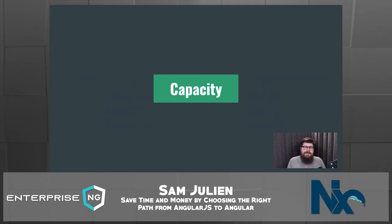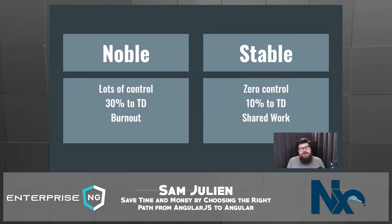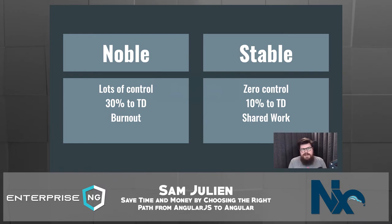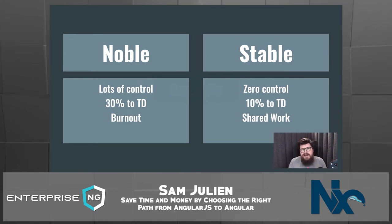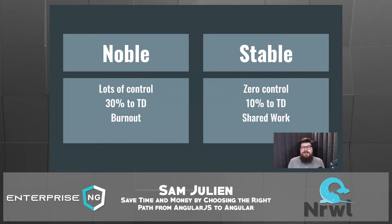The next thing to look at is the capacity of the teams, because even a large team doesn't necessarily have a lot of time for a large-scale migration. Noble Nonprofit is a small, autonomous team that can make decisions quickly. They've decided to devote 30% of their sprints to technical debt — which is what this migration really is. While that's good, working on technical debt isn't the most exciting thing, so there's a chance of burnout to be mindful of.